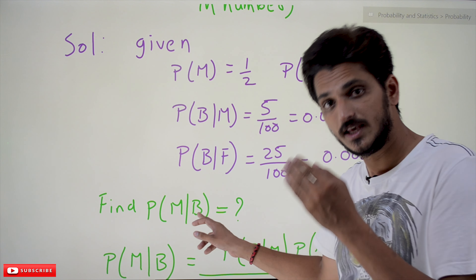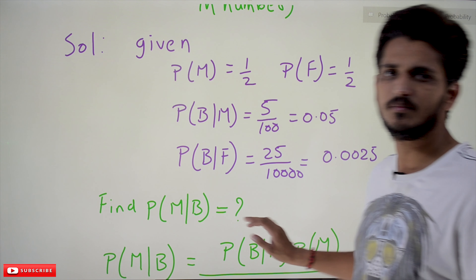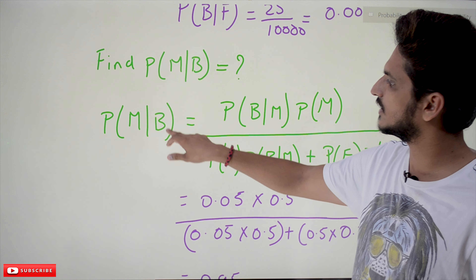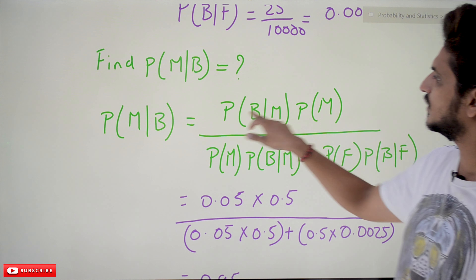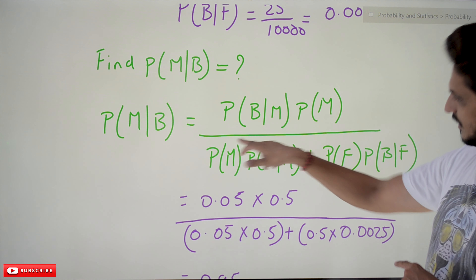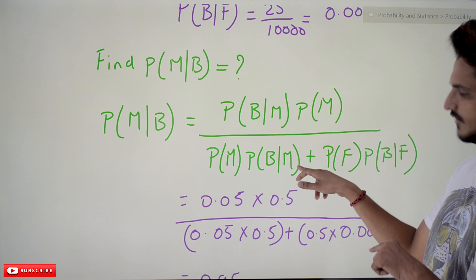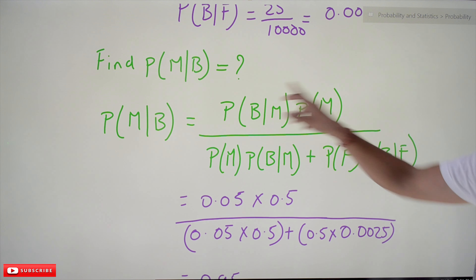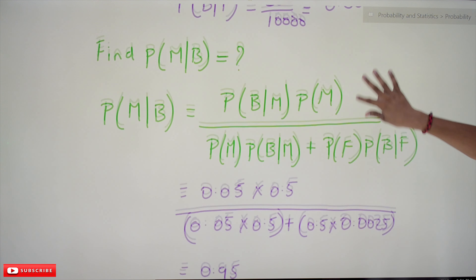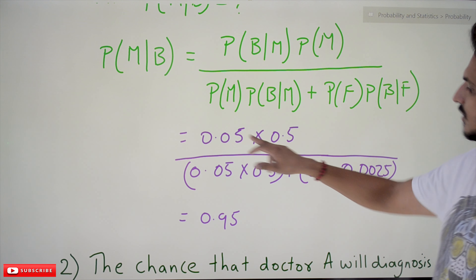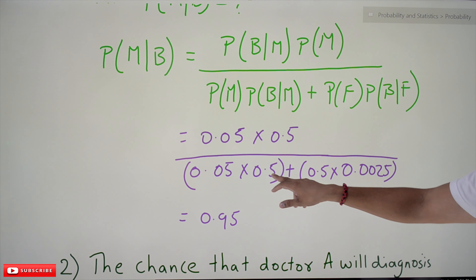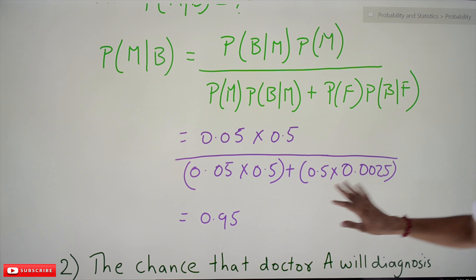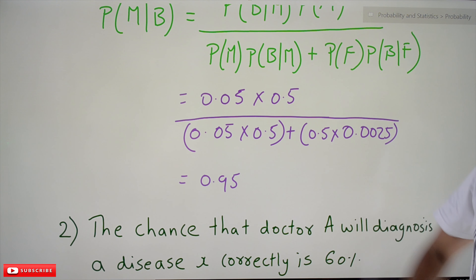From Bayes theorem, the probability of male given color-blind can be written as: probability of color-blind given male × probability of male, divided by [probability of male × probability of color-blind given male + probability of female × probability of color-blind given female]. Substituting the values: 0.05 × 0.5 divided by (0.05 × 0.5 plus 0.5 × 0.0025).